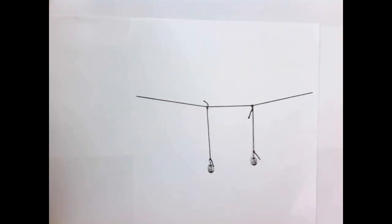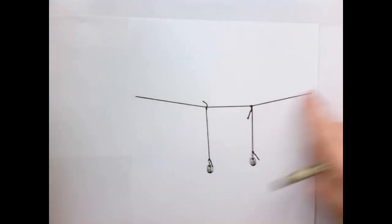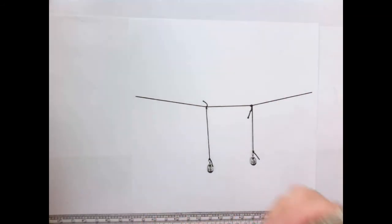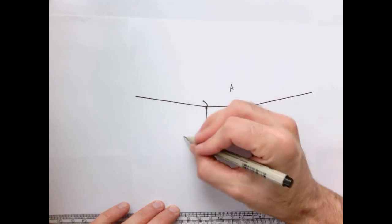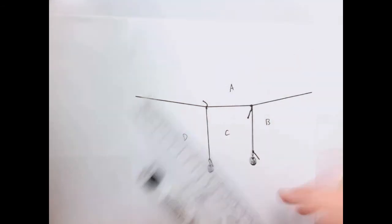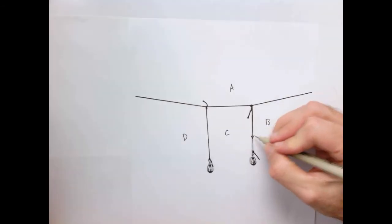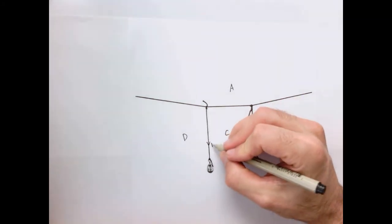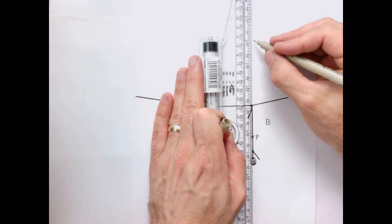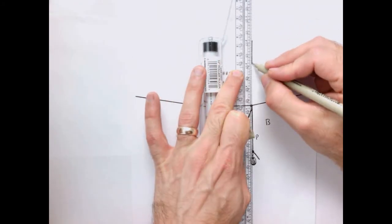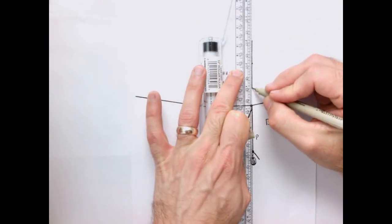Let's do another one. Same system, but a little bit different configuration — now you can see these are much, much shallower angles. So again, let me draw my notation here: A, B, C, D. I have two loads, both of the same size. So I'm going to draw two downward one-inch lines to represent my two loads.